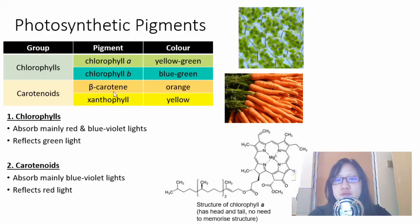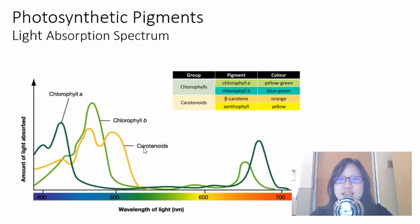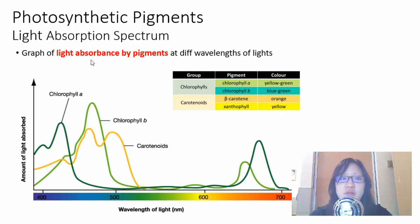If we were to take all this information and plot it into a graph, the graph will look like this. This is the light absorption spectrum. It is basically a graph of light absorbance by pigments at different wavelengths of light. Someone took each pigment and showed different wavelengths of light and calculated the amount of light absorbed. You can see chlorophyll A would absorb light around the 400 region, so blue light, as well as the red light, so its color here is yellow green.